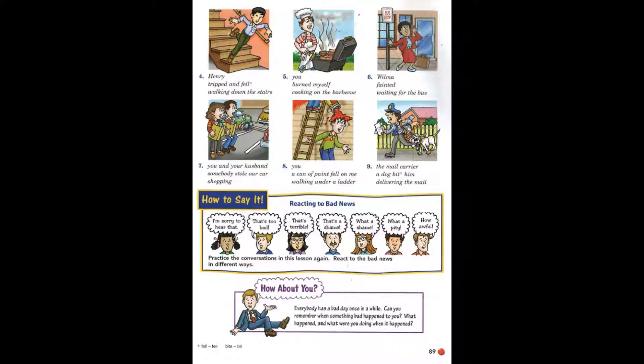6. Wilma looks upset. She had a bad day today. Why? What happened? She fainted while she was waiting for the bus. I'm sorry to hear that.